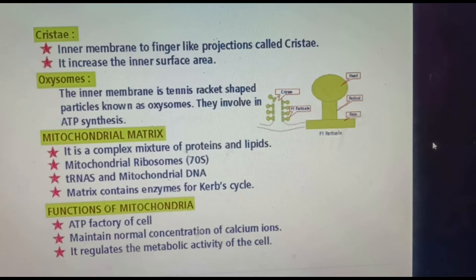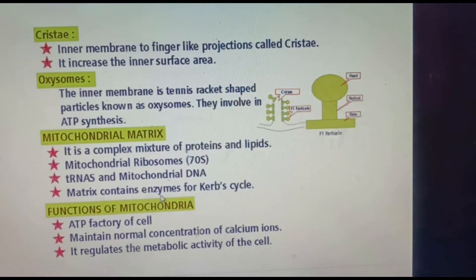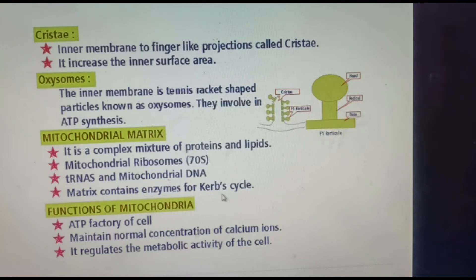The mitochondrial matrix is a complex mixture of proteins and lipids. It contains mitochondrial ribosomes of the 70S type, transfer RNAs, and mitochondrial DNA. The matrix also contains enzymes for the Krebs cycle, and oxysomes synthesize ATP.